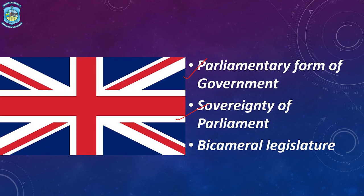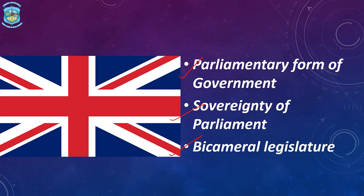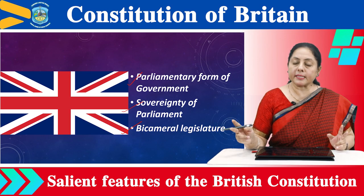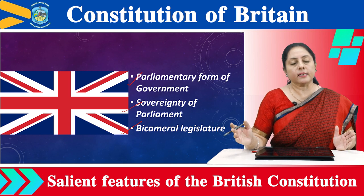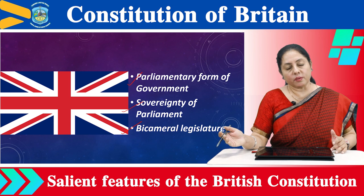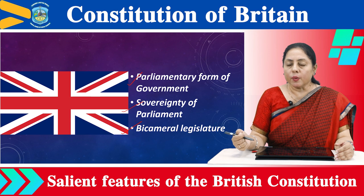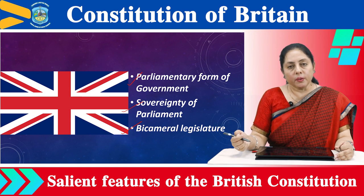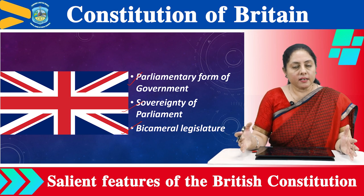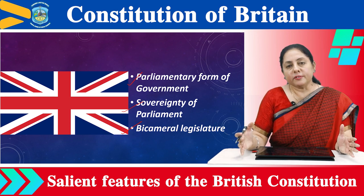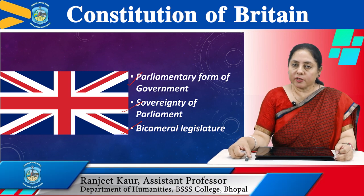The last feature is the bicameral legislature. The legislature of Britain consists of two houses: the upper house is the House of Lords, and the lower house is the House of Commons. Members of the upper house are nominated, whereas members of the lower house are directly elected. This concludes all the features of the British Constitution. Hope you liked the video — thank you so much for listening.